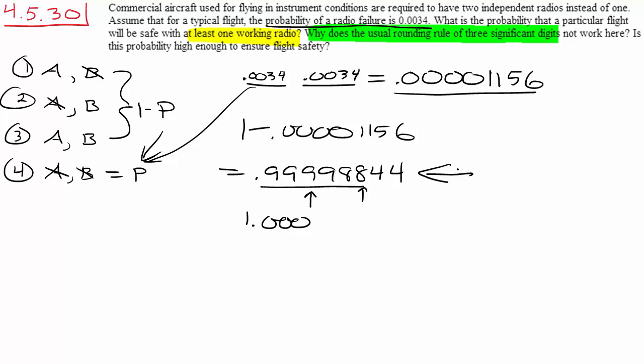A probability of one means there is no other chance. It's guaranteed. This thing is guaranteed to happen.